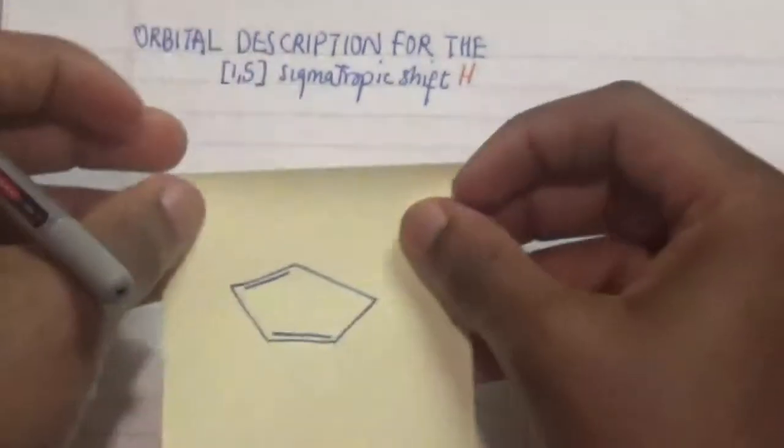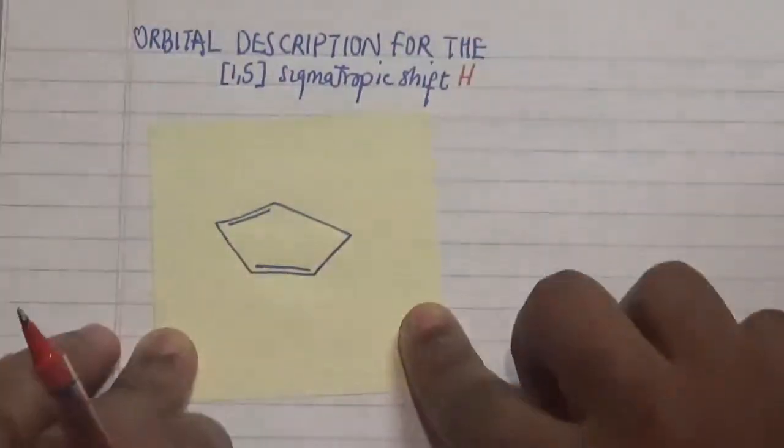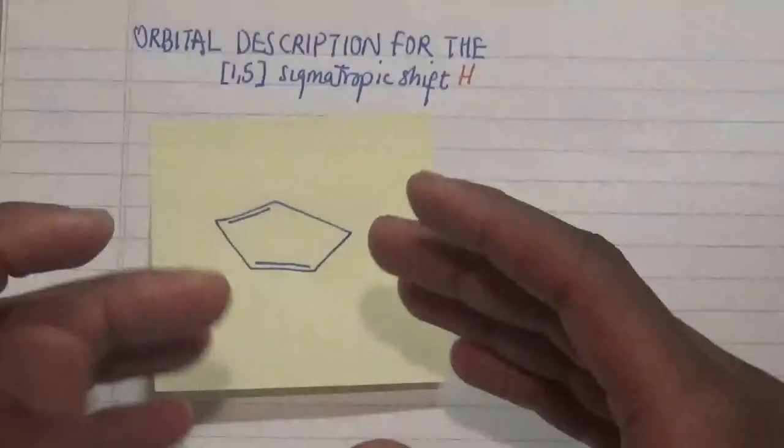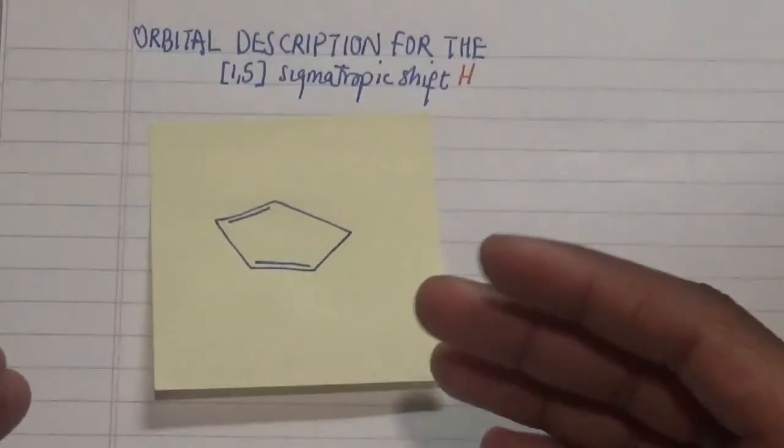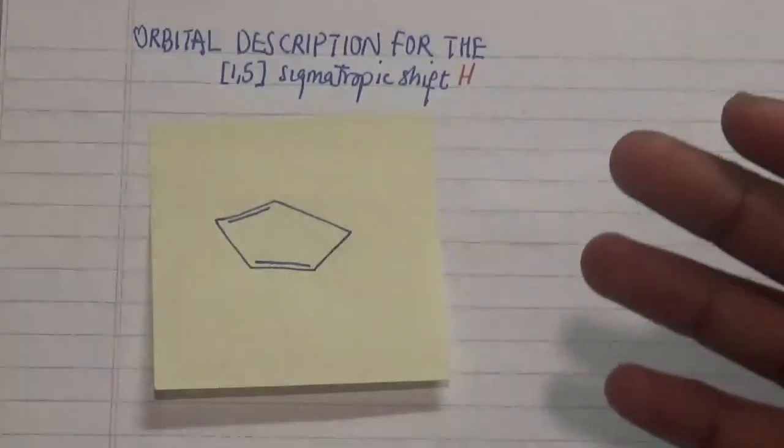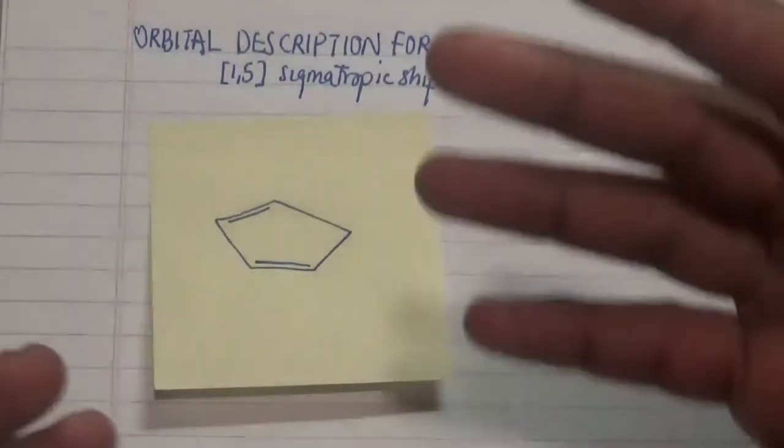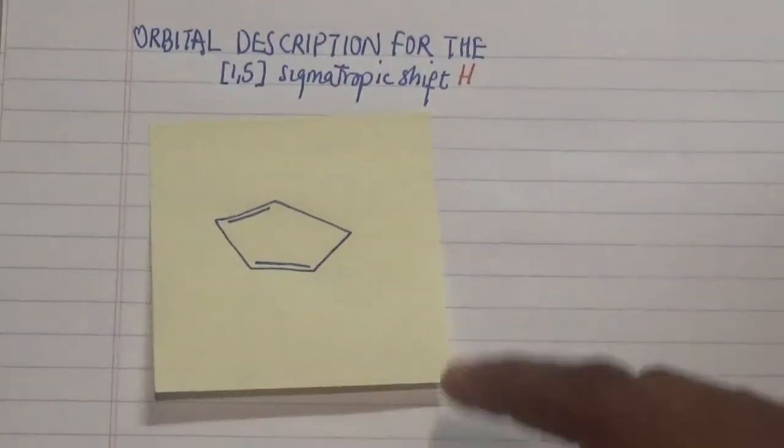Looking at this particular compound which is cyclopentadiene, we have this interesting structure where 4 of the 5 carbons are actually p orbitals or unsaturated, but this one here is actually saturated.